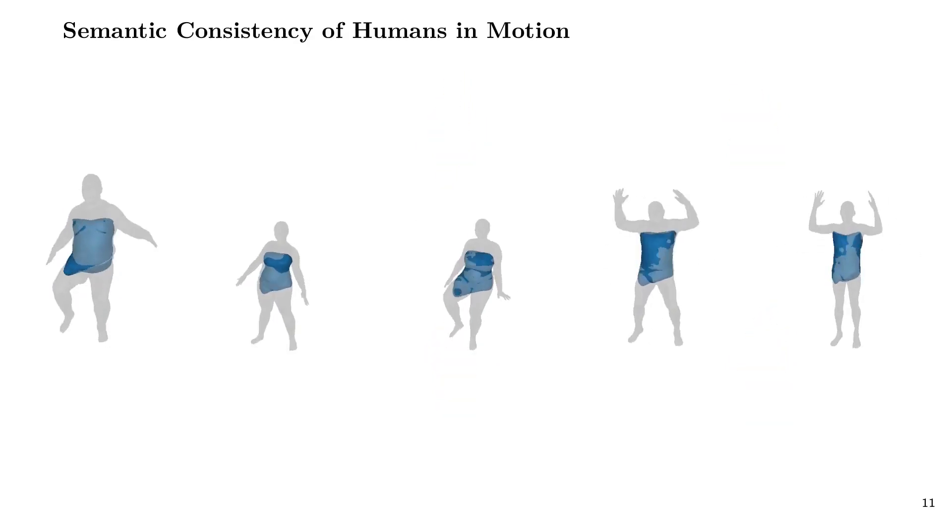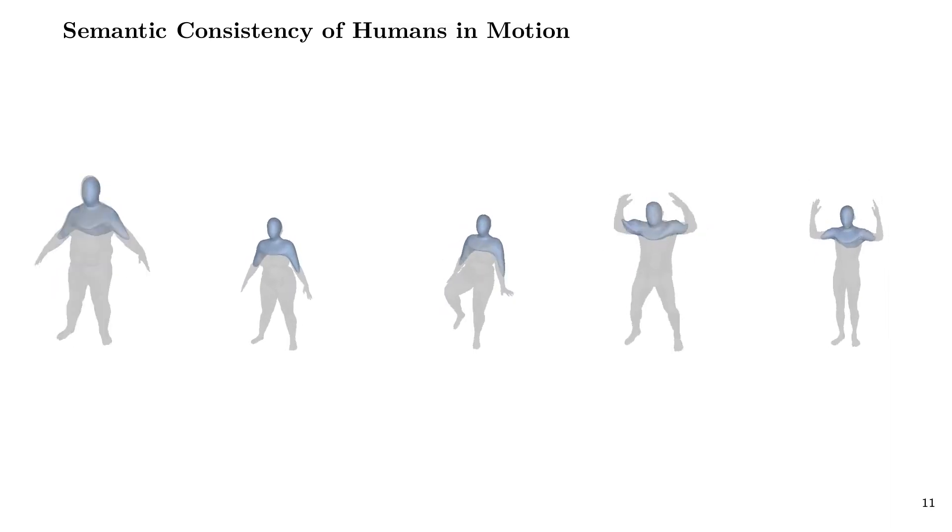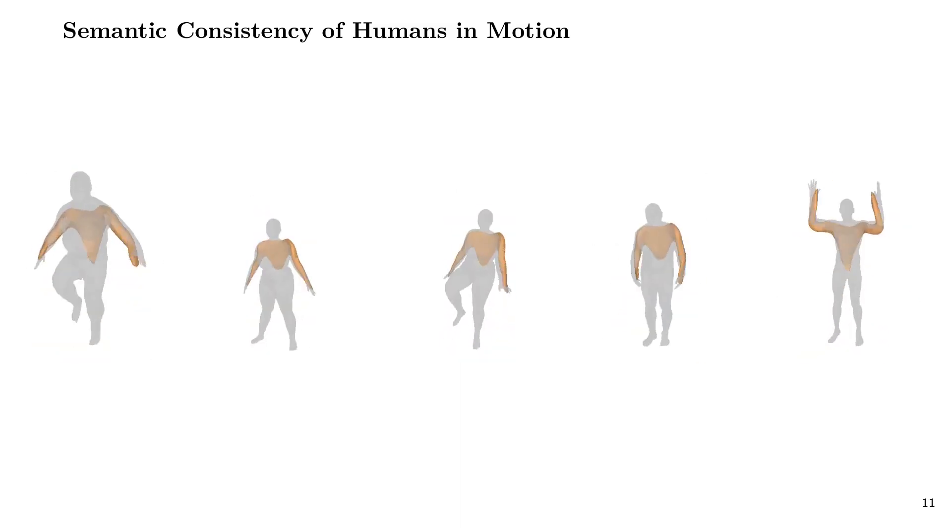We also demonstrate that neural parts preserve their semantic identity through a wide range of human motion, since the same primitive is consistently used for representing the same human part while humans are moving.